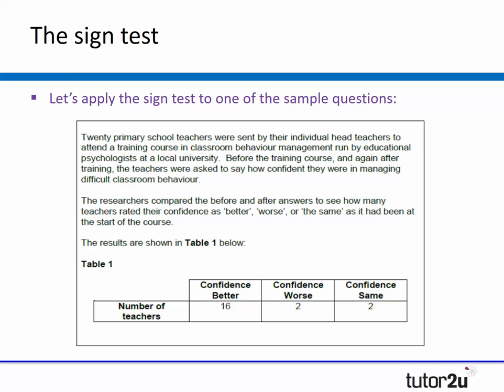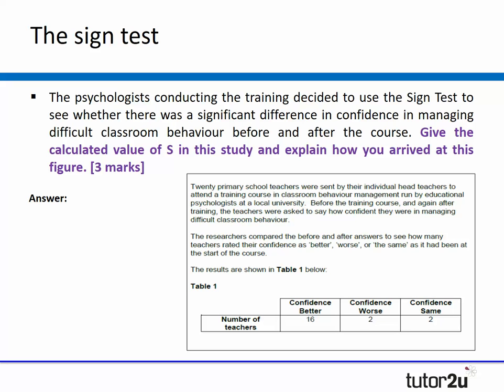Let's apply that to one of the sample questions in the specification. It says that 20 primary school teachers were sent by their individual headteacher to attend a training course in classroom behaviour management run by an educational psychologist at a local university. Before the training course and again after the training, the teachers were asked to say how confident they were in managing difficult classroom behaviour. The researchers compared the before and after answers to see how many teachers rated their confidence as better, worse, or the same as it had been at the start of the course, and the results are presented in table one. The first question is the psychologist conducting the training decided to use a sign test to see if the results were significant. Give the calculated value of S in this study and explain how you arrived at that particular figure.